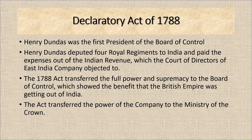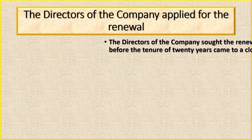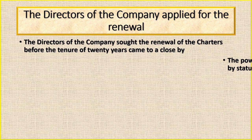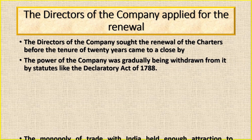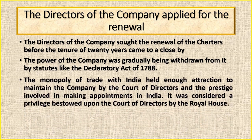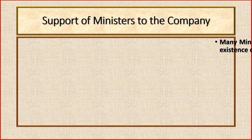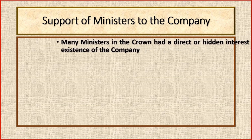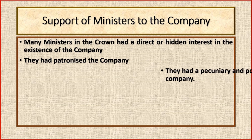Next, the directors of the company applied for renewal of the charters before the 20-year tenure came to a close. The power of the company was gradually being withdrawn by statutes like the Declaratory Act of 1788. The monopoly of trade with India held enough attraction for the Court of Directors, along with the prestige of making appointments in India — considered a privilege bestowed by the Royal House. Additionally, many ministers in the Crown had a direct pecuniary and political interest in maintaining the company and had patronized it.